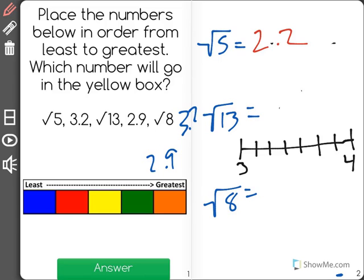Root 13, remember 3 is root 9, 4 is root 16. So root 13 would be 10, 11, 12. It would be right here. A little in the middle but it looks like it's closer to root 16. So it's close to 3.5 but it's actually more towards 3.6.